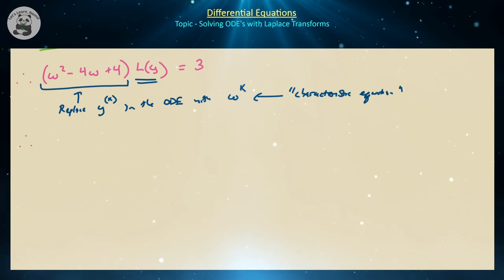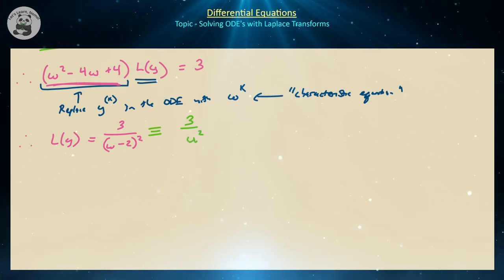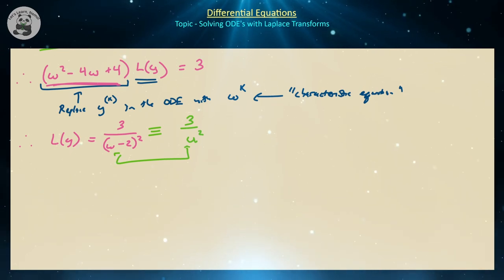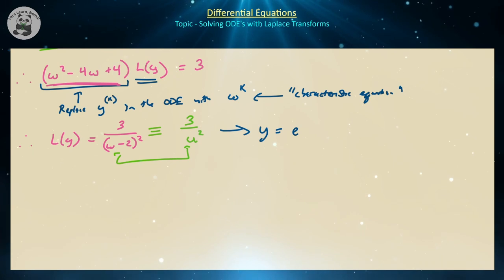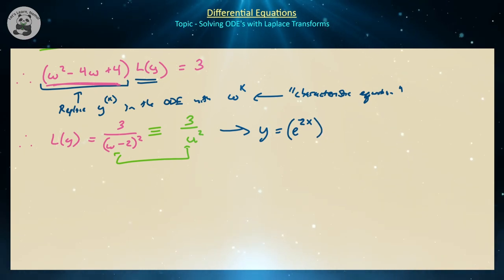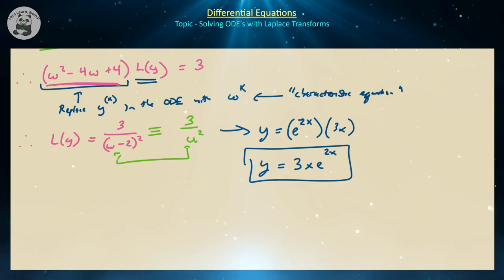Dividing both sides by the characteristic polynomial, and noting that omega squared minus 4 omega plus 4 equals (omega minus 2) squared, gives L{y} equals 3 over (omega minus 2) squared. This is a shifted Laplace transform of x, so inverting gives y equals 3x times e to the 2x — the particular solution to this initial value problem.